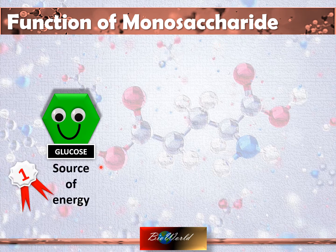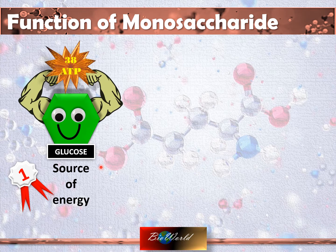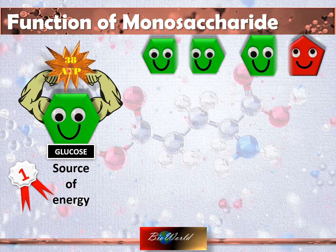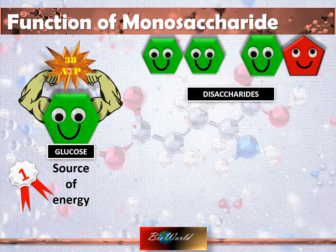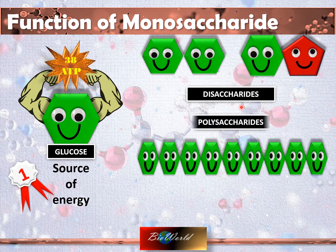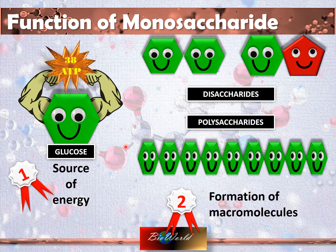The first function of a monosaccharide is as a source of energy. Oxidation of one molecule of glucose can generate 38 molecules of ATP. The second function of a monosaccharide is to carry out condensation to form disaccharides, or even to carry out polymerization to produce polysaccharides. Therefore, the second function of a monosaccharide is to form macromolecules.